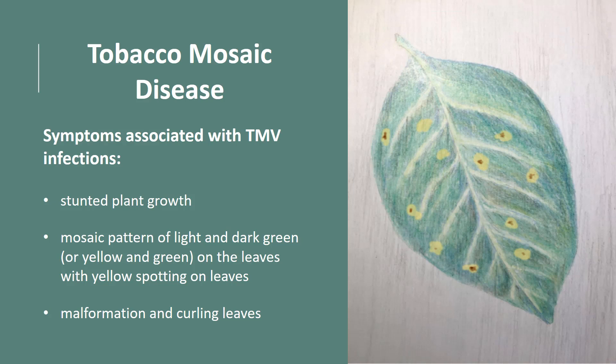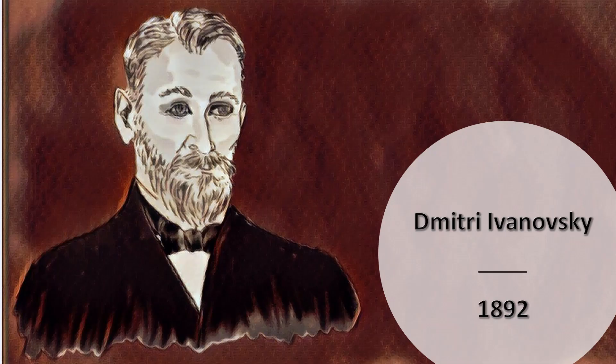While tobacco plants didn't die from the disease, the tobacco produced from these infected plants had a bitter taste and thus greatly reduced their market value. Today we know that the disease infects tomato plants, peppers, and cucumber plants as well. But in the 1800s, botanists sought to identify the cause of this disease that was responsible for destroying valuable tobacco crops.